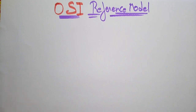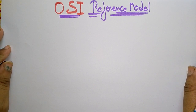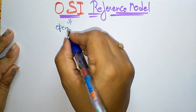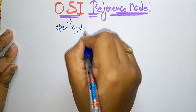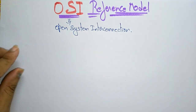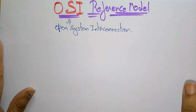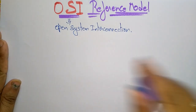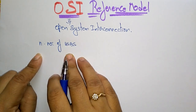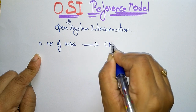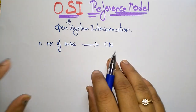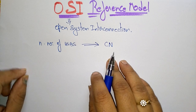Coming to the next topic in computer networks: the OSI reference model. OSI means Open System Interconnection. Why are we referencing this OSI reference model? Suppose there are n number of users — we are the users — located all over the world, using computer networks.